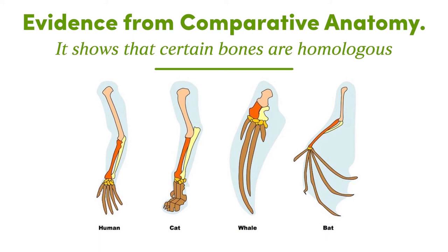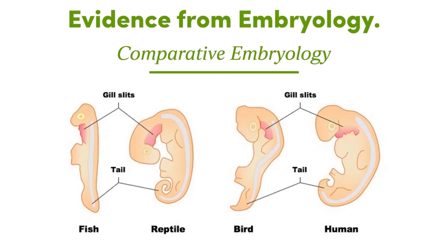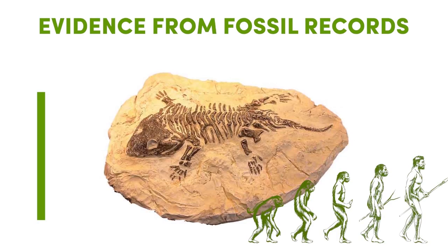The next evidence is from embryology — the study of what we have after fertilization when gametes come together to reproduce. When comparing the embryos of fish, reptiles, birds, and humans, especially at the early stage, we discover there is an evolutionary relationship between them. For example, fish and reptiles have gill slits, and at the early stage birds and humans also have gill slits — another proof of evolutionary relationship.